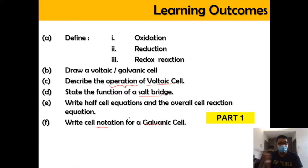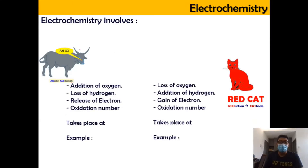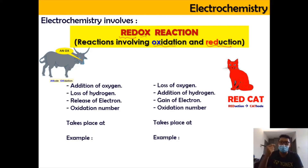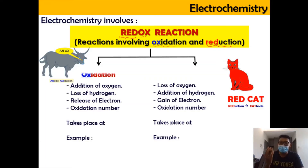So without any further ado, let us start. Electrochemistry involves basically redox reaction. Redox reaction involves two steps: 'red' refers to reduction and 'ox' refers to oxidation. It means that reduction and oxidation happen simultaneously, or at the same time. Redox reaction can be divided into two: oxidation and reduction.